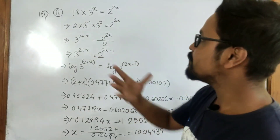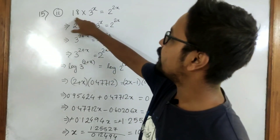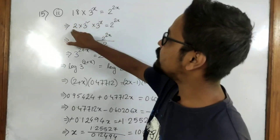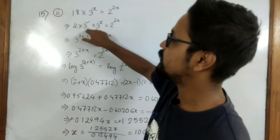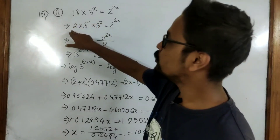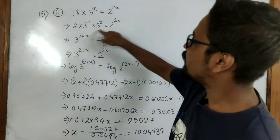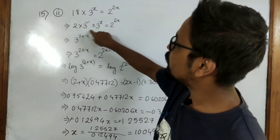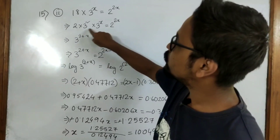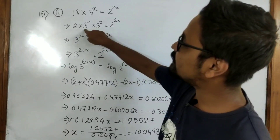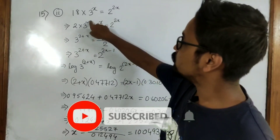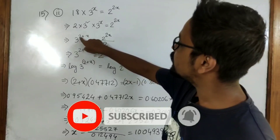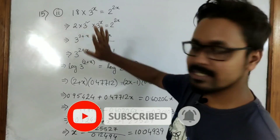First, we simplified or factorized 18. We can write 18 as 2 into 3 squared. 3 squared is 9, so 2 nines are 18, keeping the rest the same. Then we combined these two terms — the base 3 is the same and it is multiplication, so the powers will be added. So it becomes 3 to the power 2 plus x.